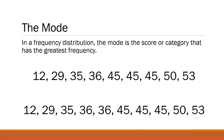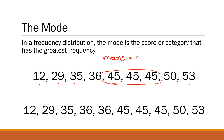Then lastly, we also have the mode. The mode is the score or category that has the greatest frequency — it is the most common or most popular score. In our first example, we have 12, 29, 35, 36, 45, 45, 45, 45, 15, 53. Obviously, 45 is the only number repeated more than once, so our mode is 45.